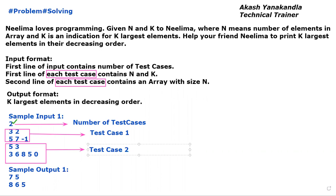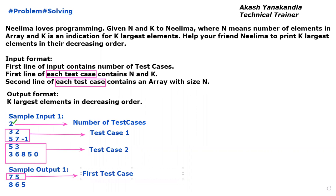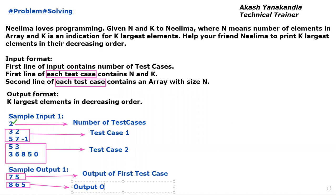In sample output 1, the value 7 5 is the output for the first test case. And 8 6 5 is the output for the second test case.